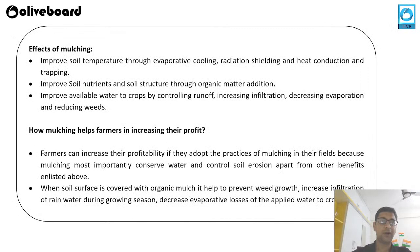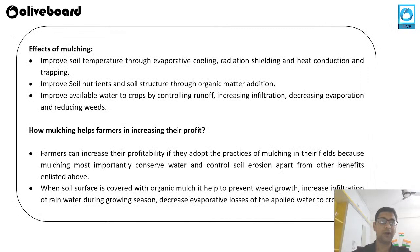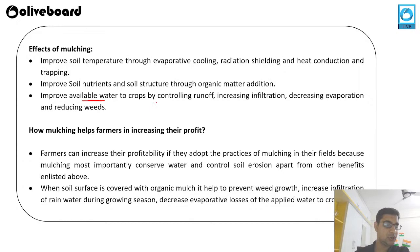The effects of mulching include: improving soil temperature through evaporative cooling, radiation shielding, and heat conduction; soil nutrition retention; proper soil structure formation; retention of organic matter; improving availability of water by controlling runoff, increasing infiltration, decreasing evaporation; and reducing weeds.